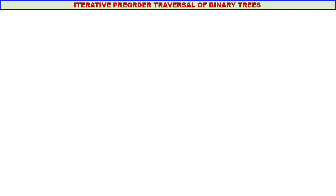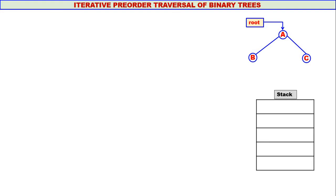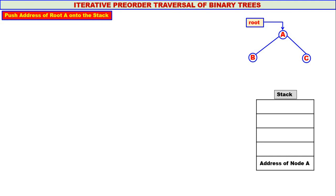My dear students, in this video we will discuss iterative pre-order traversal of binary trees. Let us consider this tree. A is the root of the tree and this is our stack. The first step is to push the address of root A onto the stack. So the address of node A is pushed onto the stack.